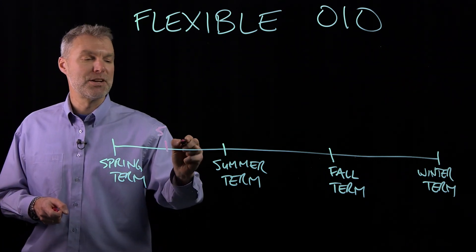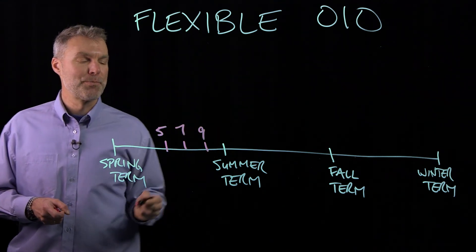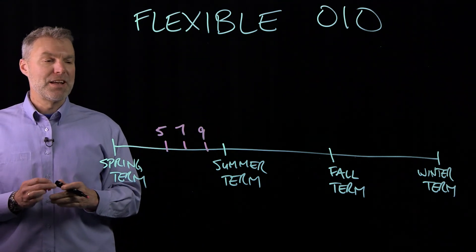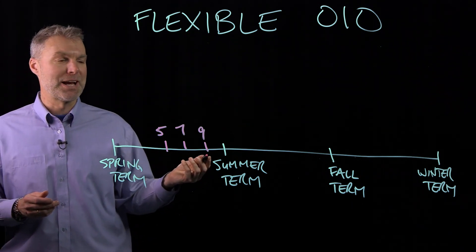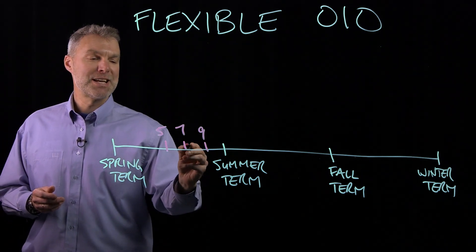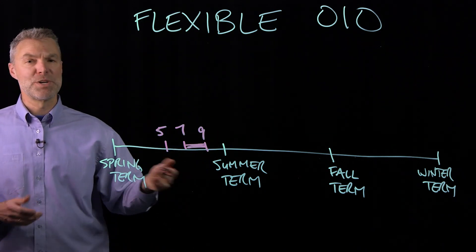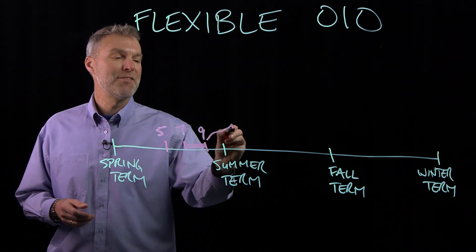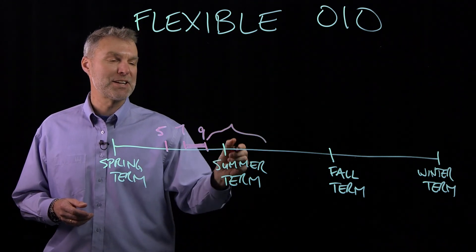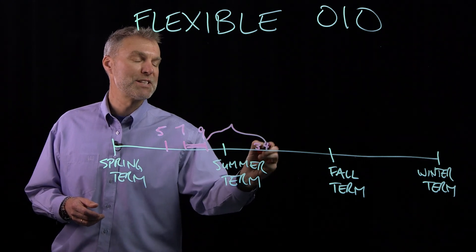The FOT class takes place during weeks seven and nine of every term. And then the thing you'll want to be thinking about in terms of your instructor and the timing is that the rest of the OIO, which is somewhat flexible, takes place at the end of that term into the beginning of the next term, so maybe weeks three or four of the next term, possibly five.